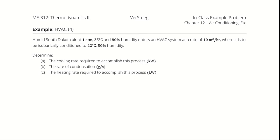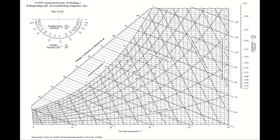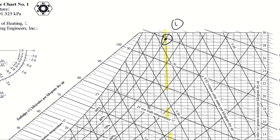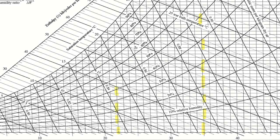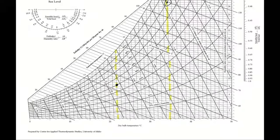Let's start by visualizing this on the psychrometric chart. We are starting with 35 degrees Celsius and 80% humidity. 35 degrees Celsius and 80% humidity is going to be right here — I'll highlight that number. That's state 1. And we are trying to get down to 22 degrees Celsius and 50% relative humidity. Our end condition is right here. I should call that state 3.